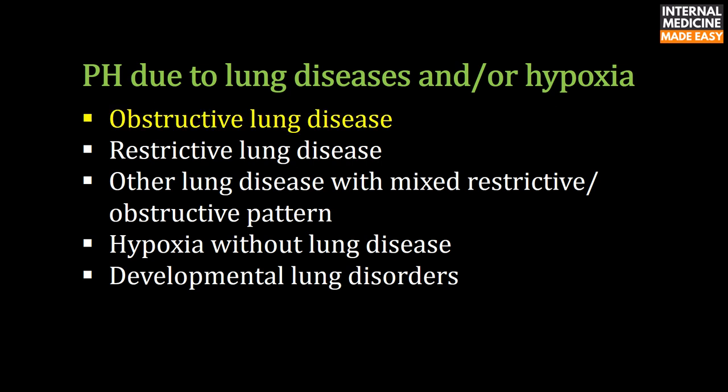Pulmonary hypertension is an important predictor of mortality in COPD and contributes to disability in this disease. Many factors contribute to its development, including reduction of the pulmonary vascular cross-sectional area due to parenchymal loss and accompanying hypoxia, effects of abnormal pulmonary mechanics due to hyperinflation, and vascular remodeling processes.